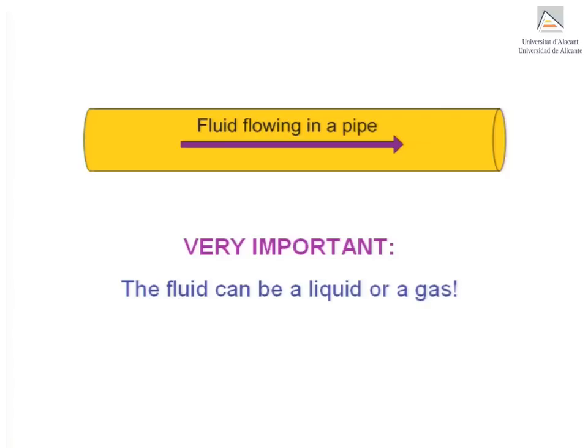The fluid flowing along a pipe may be either liquid or gaseous. Knowing what phase the fluid is in is very important when the volumetric flow rate is involved, as we shall soon see.